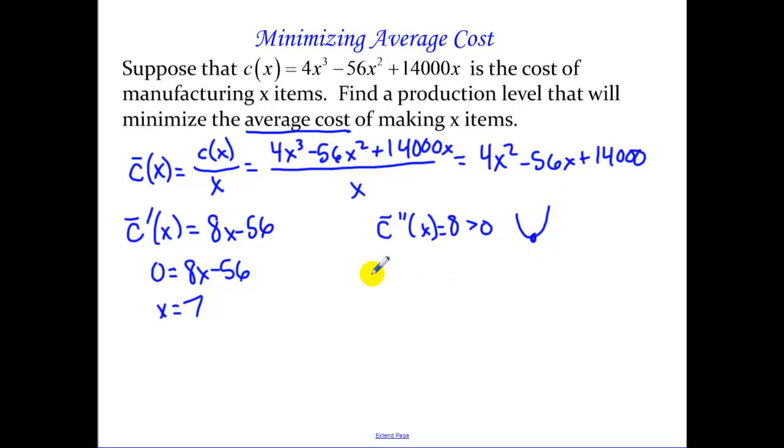My minimum happens at X equals 7. Therefore, we have our minimum of 7 items.